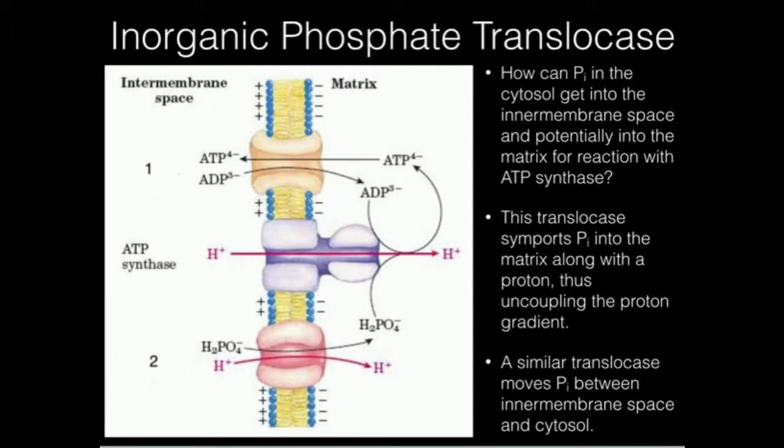Ultimately the goal is to get the phosphate in the matrix so it can react with ATP synthase and you make ATP. So these two proteins, the inorganic phosphate translocase and the adenine nucleotide translocase, are really important for the synthesis of ATP.